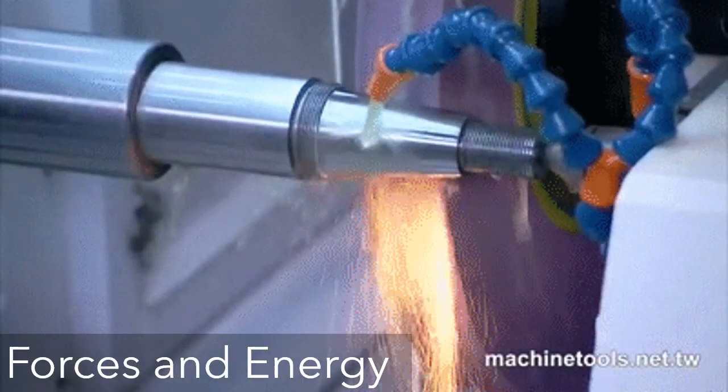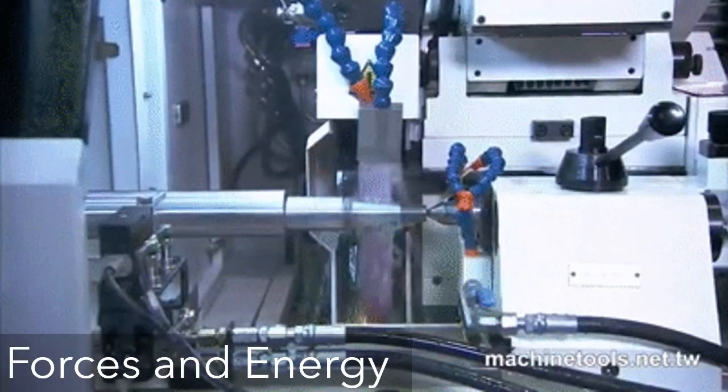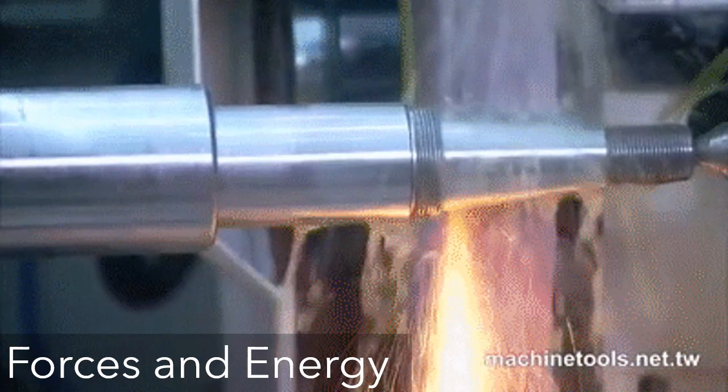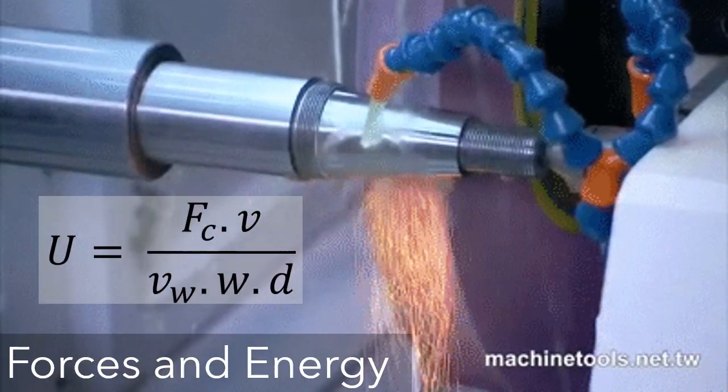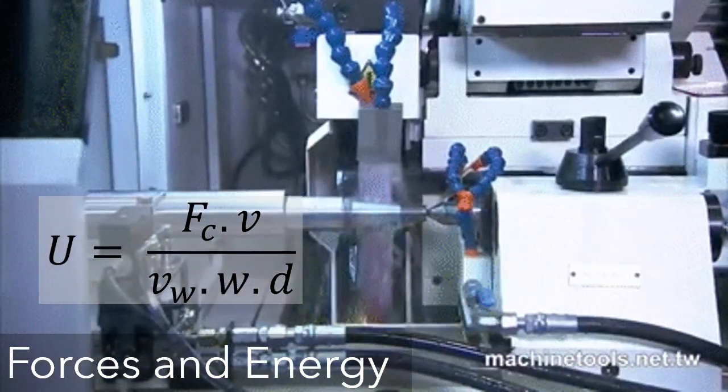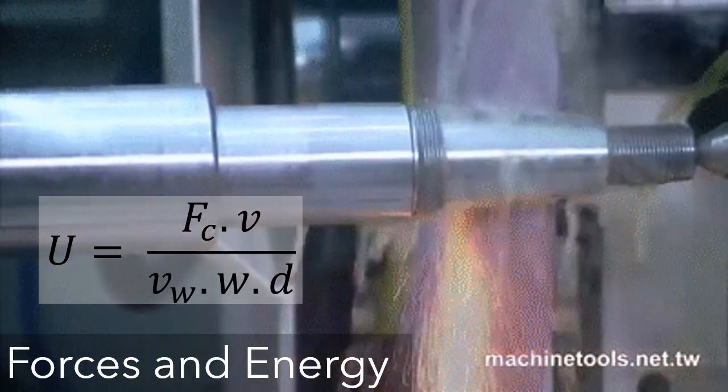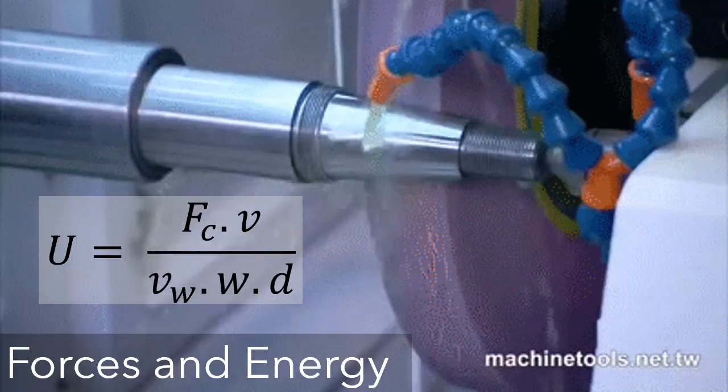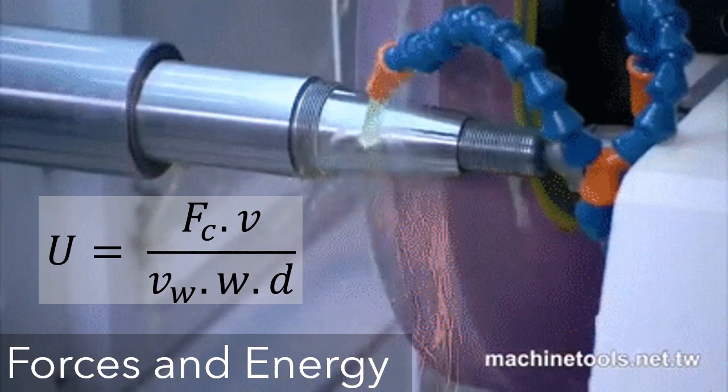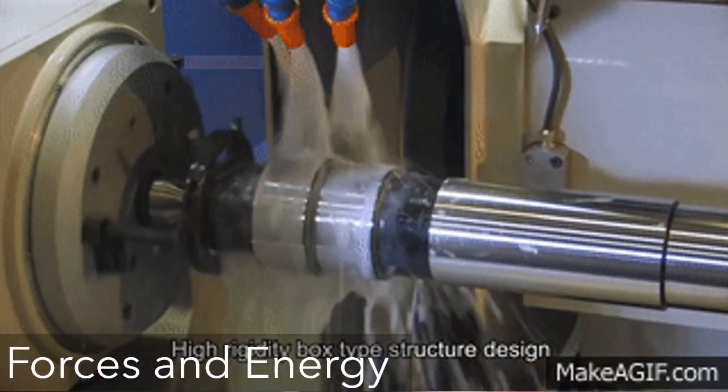If the force required to drive the work past the grinding wheel were known, specific energy in the grinding wheel could be determined as U. In grinding, specific energy is much greater than in conventional machining. There are several reasons for this.